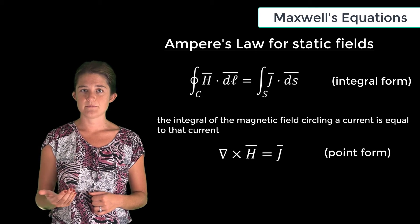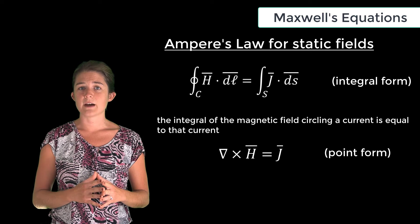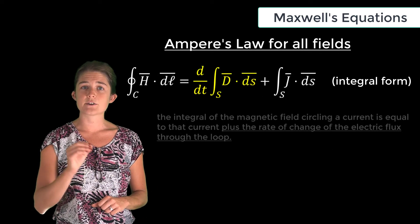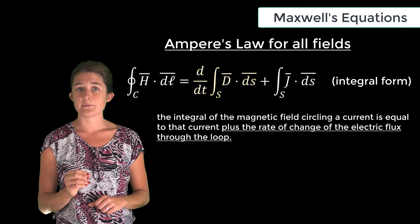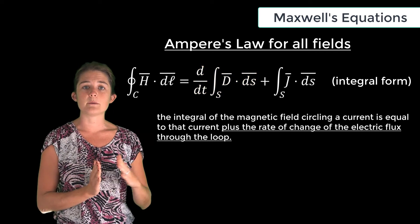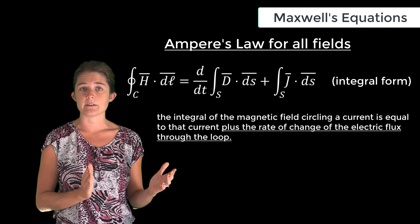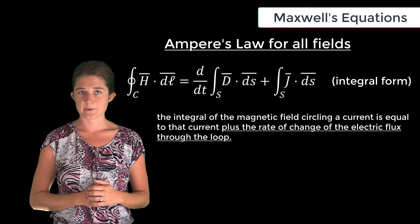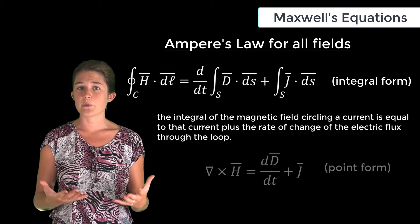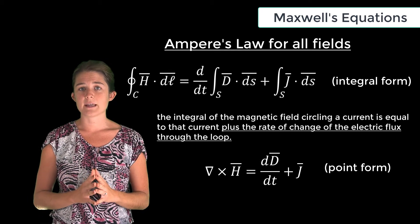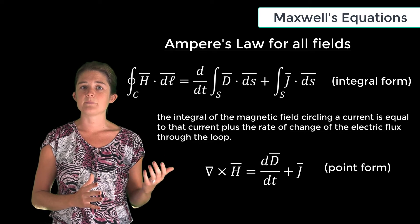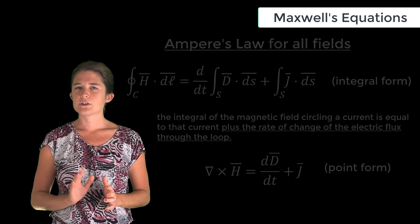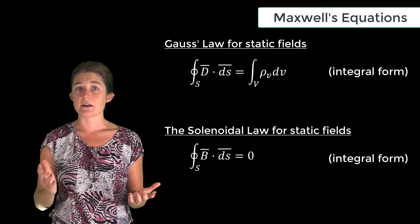To make Ampere's law valid for time-varying fields, we add an extra term. The integral of the magnetic field around a closed loop now equals the total current passing through the surface enclosed by the loop, plus the time derivative of the electric flux through the loop. Equivalently, in point form, the curl of the magnetic field equals the current density plus the time derivative of the electric flux density.